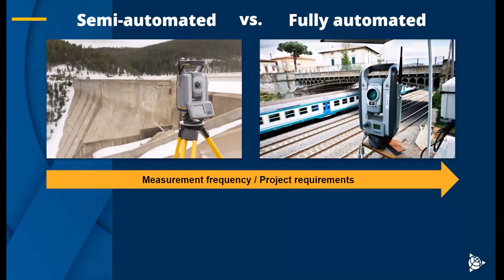It's worth touching on the two different methods for collecting monitoring data with the total station. We have the semi-automated workflow, which is typically done with that tripod setup. This is going to be somebody going out with a total station with their data collector and manually or semi-automated measuring data on the same set of prisms, whether it's once a day, once a week, once a month. They're going out, setting up the total station, running the resection, and measuring all the monitoring targets and computing displacements based off some relative baseline.